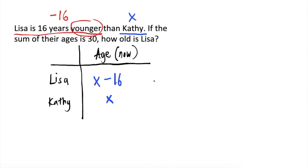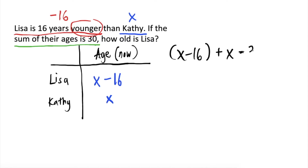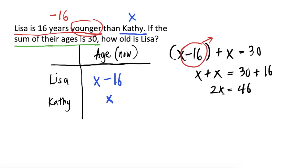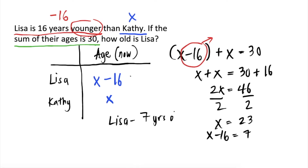Actually, in problems like this, pwedeng i-assign natin na yung age ni Lisa is x, tapos si Kathy naman is x plus 16. Whichever is easier to understand, as long as consistent kayo throughout the problem. Since the sum of their ages is 30, if we add x minus 16 plus x, that would be equal to 30. We'll have x plus x, transfer negative 16 on the other side, that's equal to 30 plus 16. Simplifying, 2x is equal to 46, then divide both sides by 2, we will get x is equal to 23. Since Lisa's age is x minus 16, 23 minus 16 is equal to 7. Our final answer is Lisa is 7 years old.